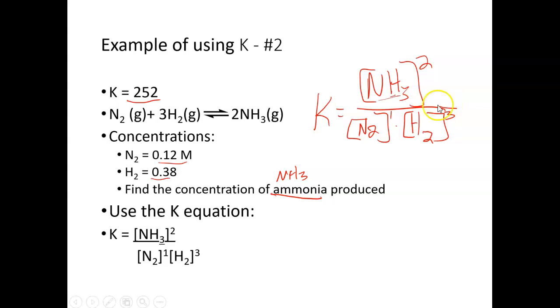Now I'm going to use my K equation, and I'm going to need to plug in the values for each of these and solve for the ammonia. You could also rearrange this equation first, then plug in the values. You can do it either way. So I'm going to just plug in the values from the problem. K was 252. I have 0.12 and 0.38. Don't forget that this is going to end up being cubed and that this value is squared.